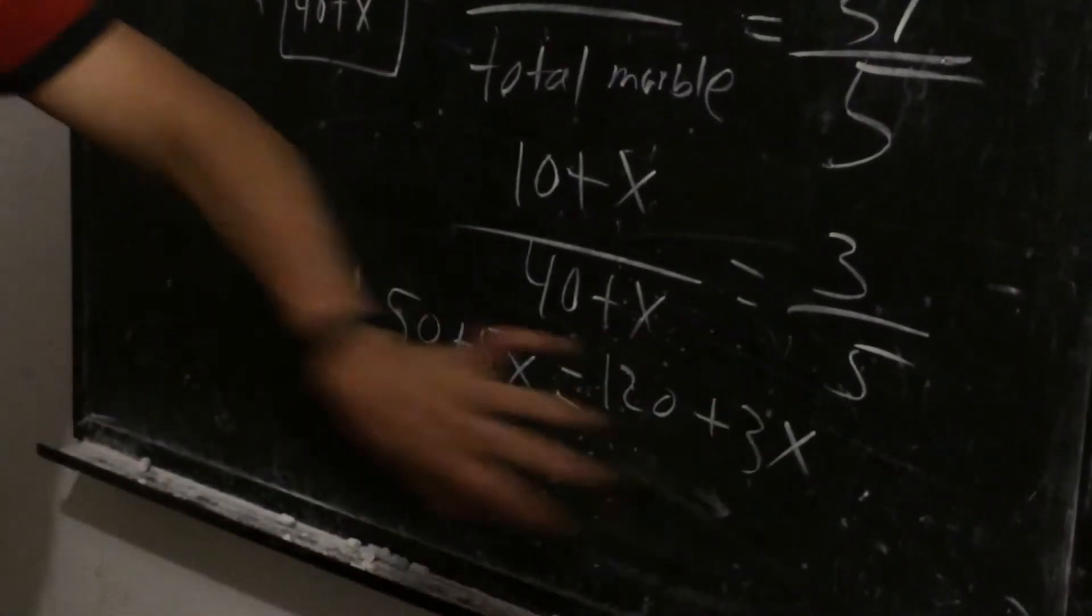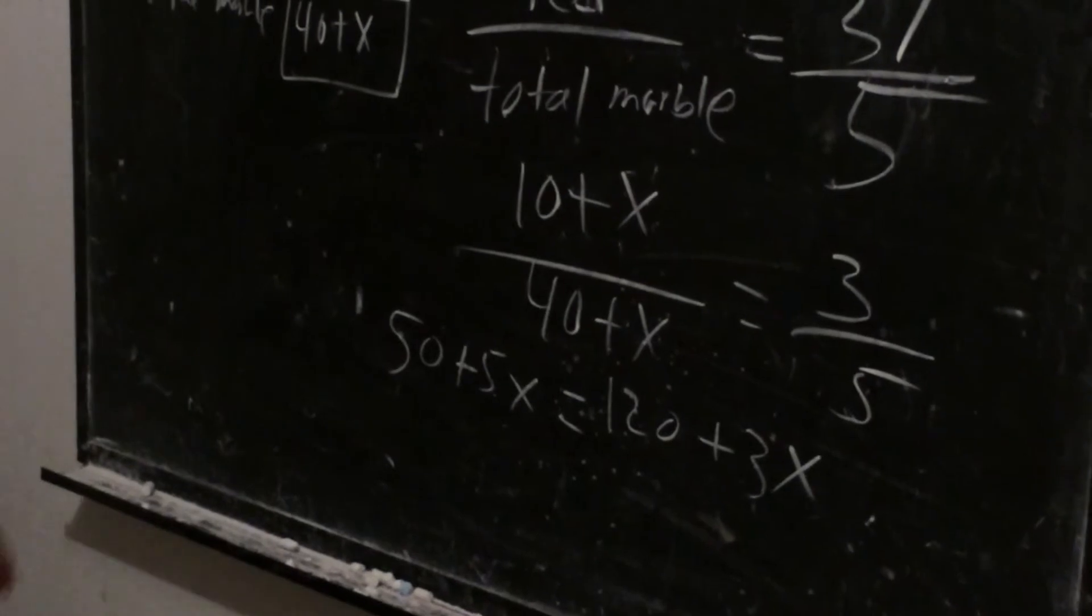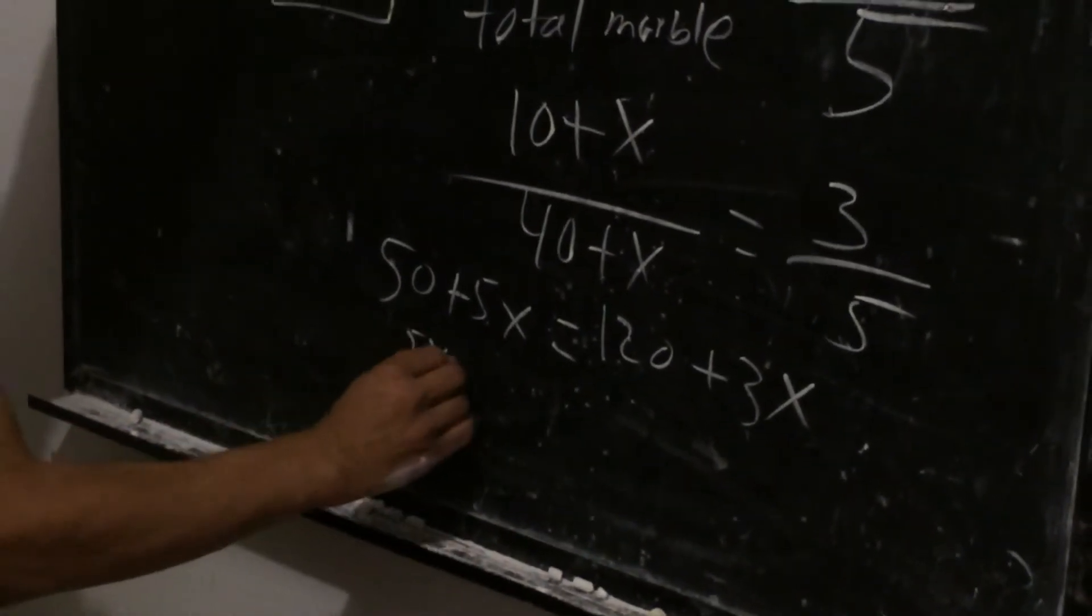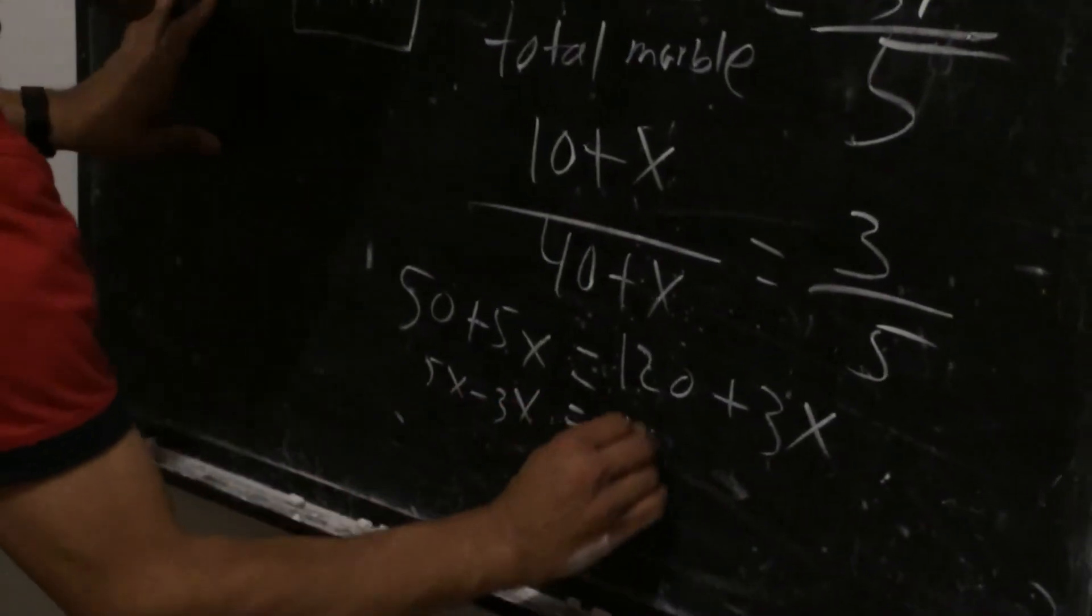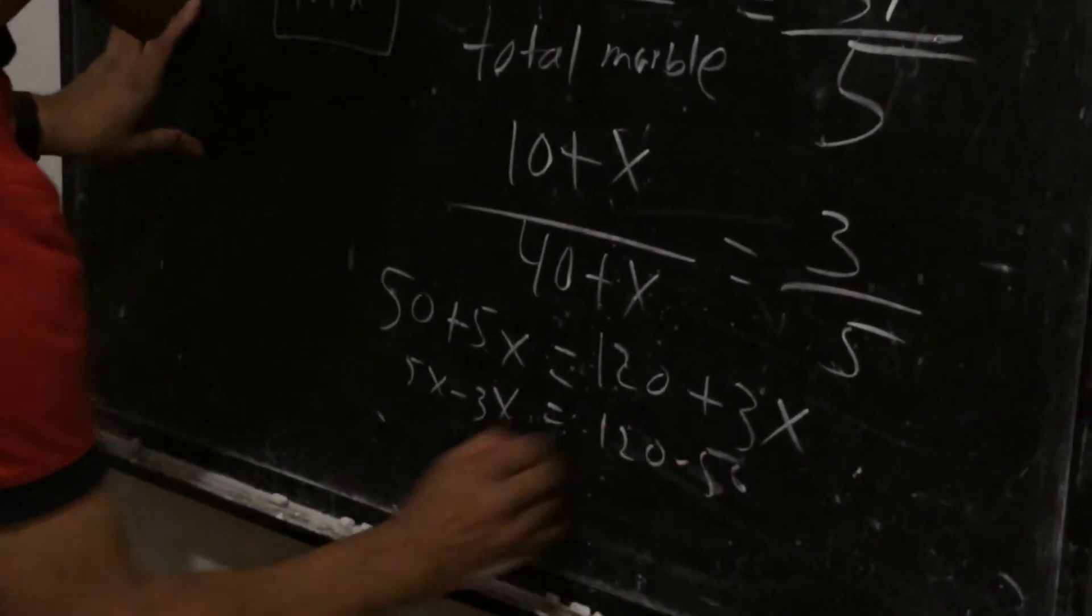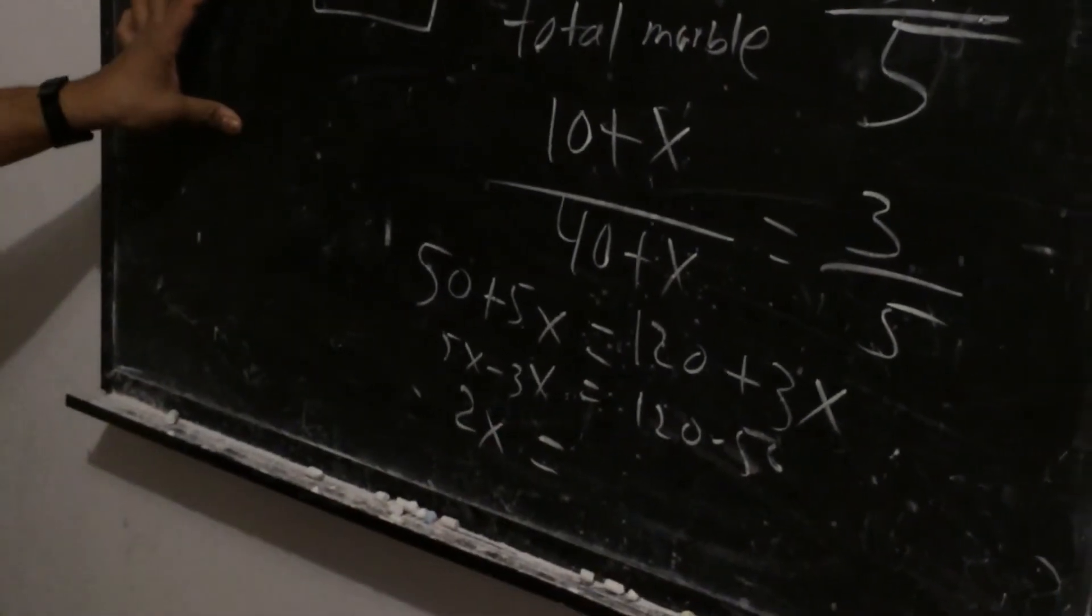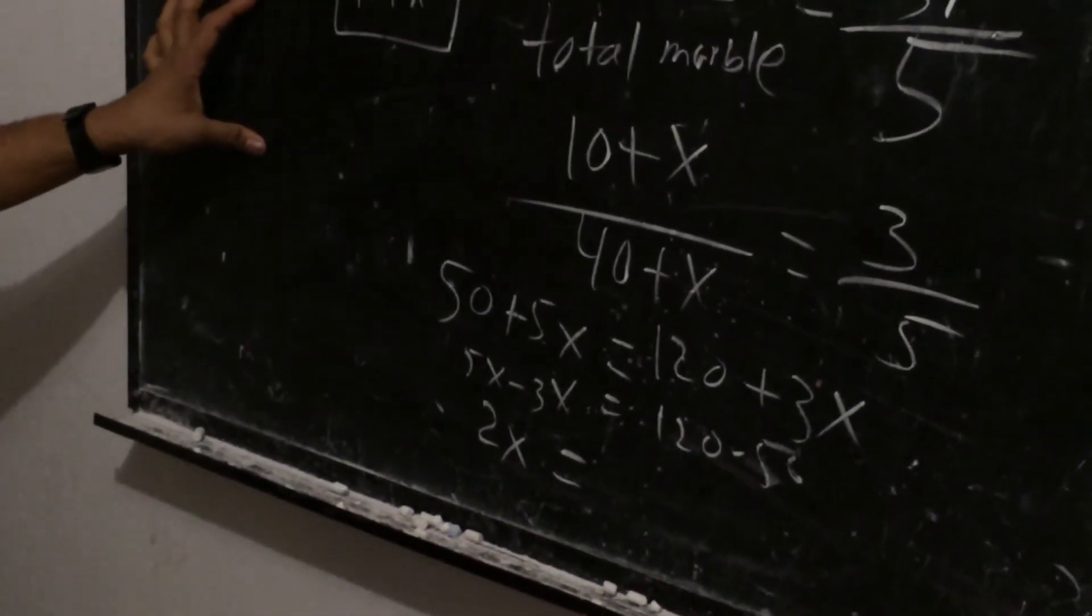Now bring x on this side and send 50 to the right side. So 5x minus 3x equal to 120 minus 50. So 2x is equal to, I don't know, 70 I guess.